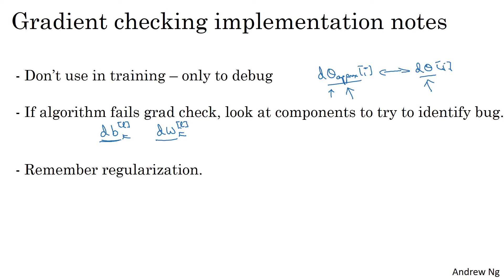Next, when doing grad check, remember your regularization term if you're using regularization. So if your cost function is J of theta equals 1 over m sum of your losses and then plus this regularization term, sum of the wl Frobenius norm squared, then this is the definition of J. And you should have that d theta is gradient of J with respect to theta, including this regularization term. So just remember to include that term.